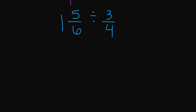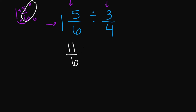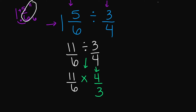Now we have a mixed number divided by a proper fraction. First, let's turn this mixed number into an improper fraction. One and five sixths: one times six gives us six, plus five gives us 11. So the improper fraction is 11 over six. This is going to be divided by three over four. So 11 over six stays the same. Division turns into multiplication, and the reciprocal of three over four is four over three. The reciprocal of three over four equals four over three because when multiplied together, the product is one.